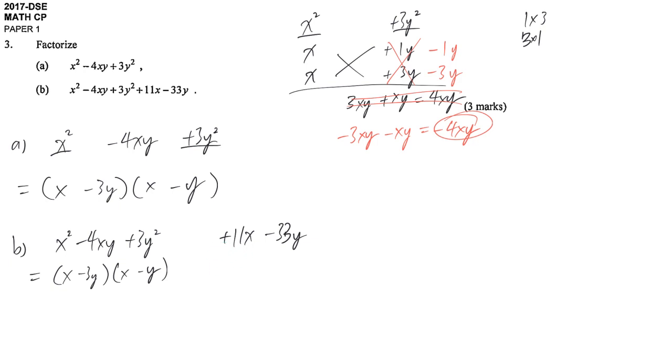Then right hand side. I want x, that's why I extract positive 11. If I extract it, the first term divided by 11, we get x. Negative 33 divided by 11, we get negative 3 and y.